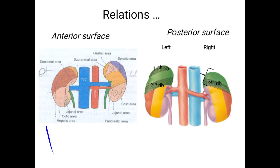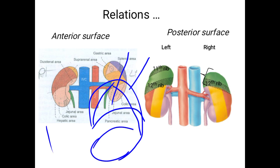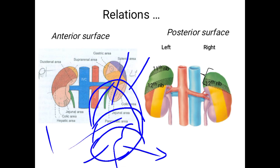The left kidney anteriorly is related to the suprarenal gland, splenic area, gastric area for the stomach, pancreatic area, small intestine (jejunal area), and colic area for the left colic flexure. These are the anterior relations of the left kidney.